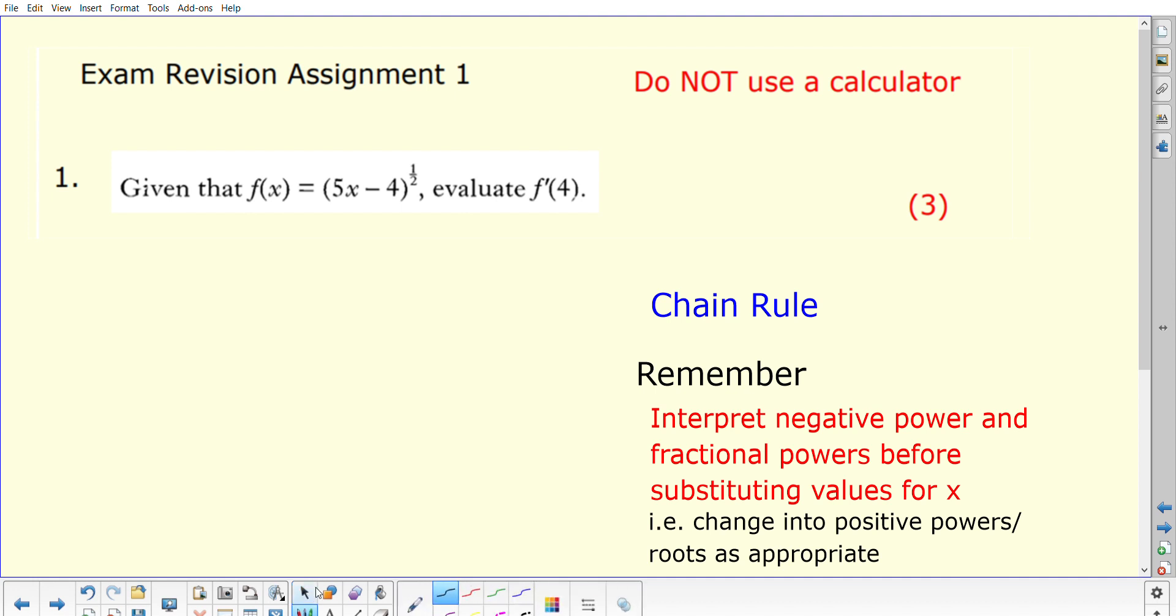This first question was differentiation. Given this function here, you're evaluating f dashed at a particular value. The starting point should be that you recognize an expression like this to differentiate requires the chain rule. The chain rule acknowledges that you've got a complex function - a power function that needs to be differentiated, plus this other function within the bracket that also needs to be differentiated.